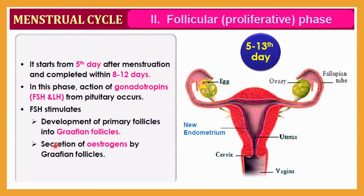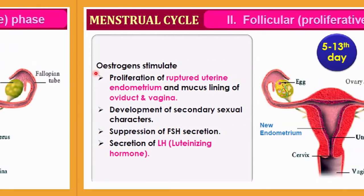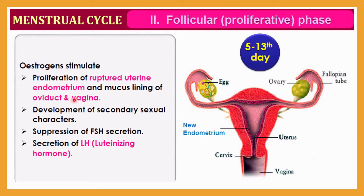The Graafian follicle is responsible for secretion of estrogen. Estrogen stimulates proliferation of the ruptured uterine endometrium, rebuilding it after menstruation. It also promotes mucous lining of the oviduct and vagina, and development of secondary sexual characteristics in females. Additionally, estrogen helps regulate FSH secretion.